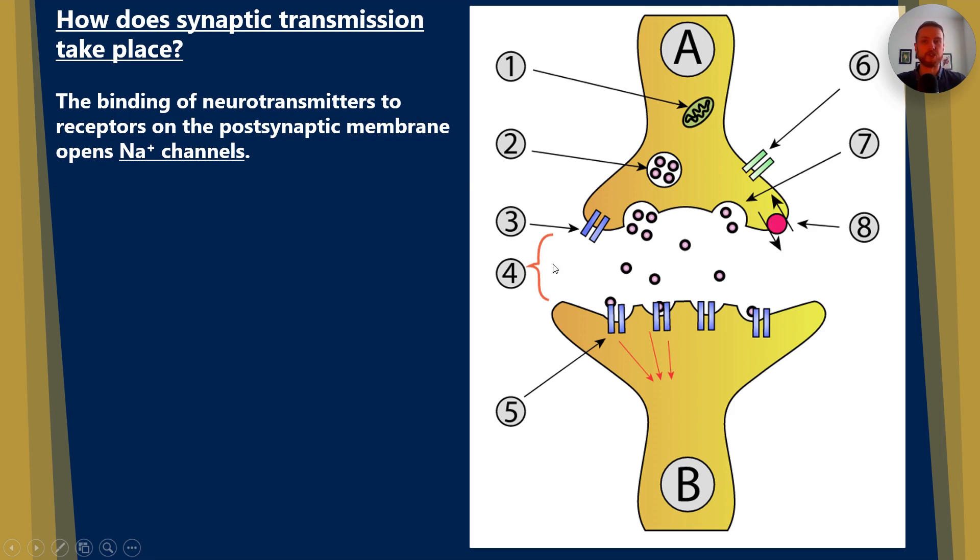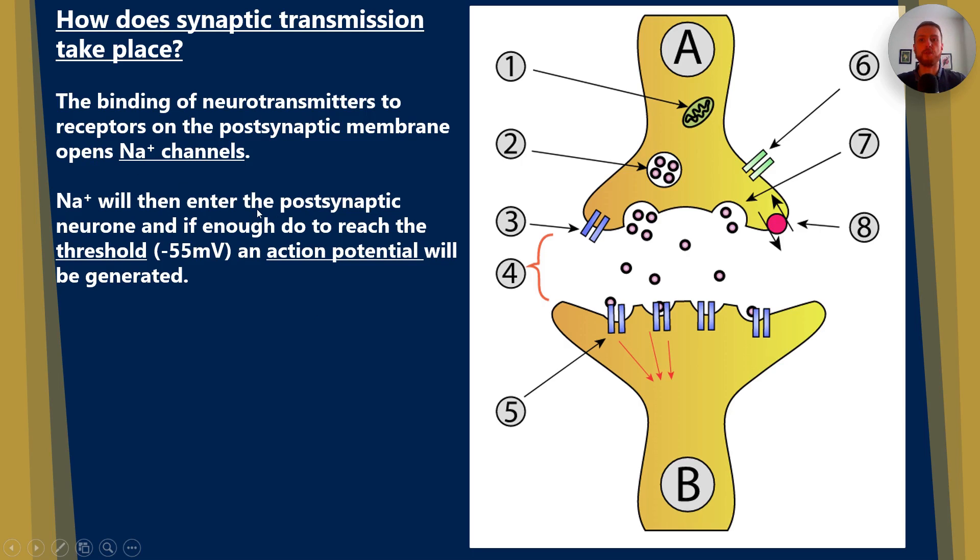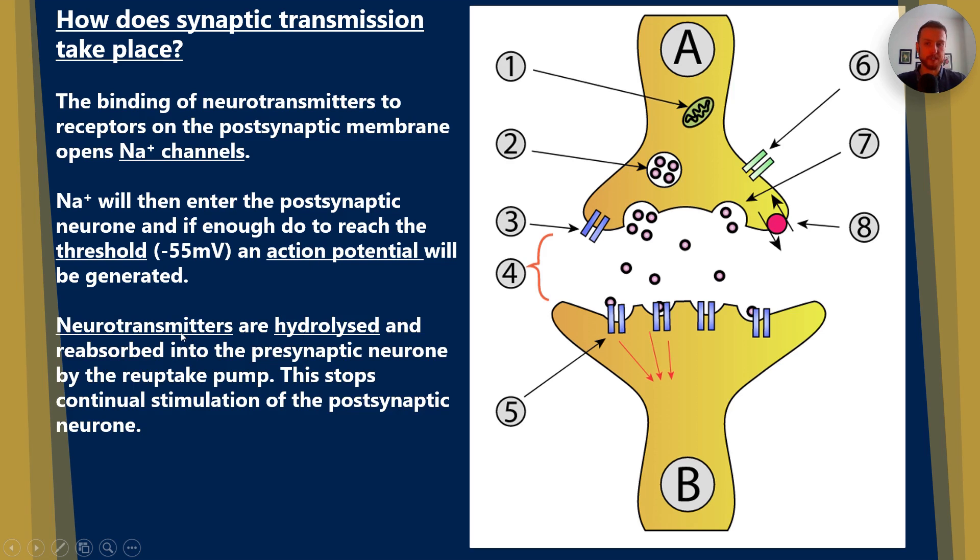The binding of neurotransmitters to receptors on the post-synaptic membrane, as discussed, opens those sodium ion channels. The sodium ions will then enter the post-synaptic neuron. If enough do this to reach the threshold of minus 55 millivolts, an action potential will be generated. Neurotransmitters are then hydrolyzed and reabsorbed into the pre-synaptic neuron through that reuptake pump at number eight. This stops continual stimulation of the post-synaptic neuron.